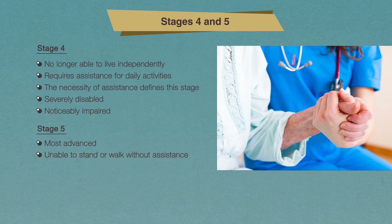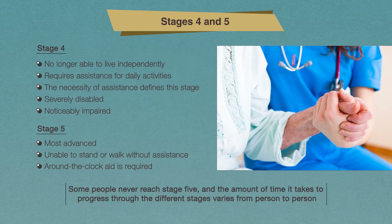The most advanced stage of this disease is stage five. This stage is identified by your inability to stand or walk without assistance. Around-the-clock aid is required at this stage of the disease to help reduce any risk of falling and help you with all of your daily activities. Some people never reach stage five.